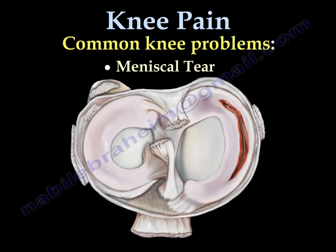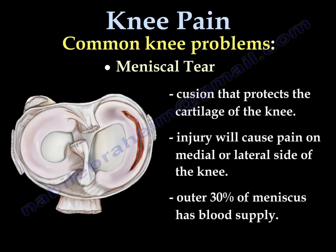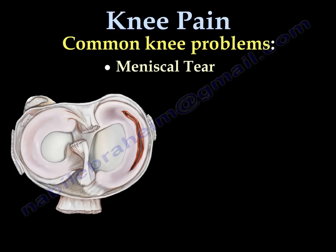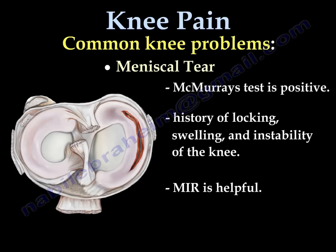The meniscus is the cushion that protects the cartilage of the knee. Injury causes pain on the medial or lateral side of the knee, with the most specific sign being pain at the joint line itself. The tear presents with a history of locking, swelling, and instability. McMurray test is usually positive and MRI is very helpful.